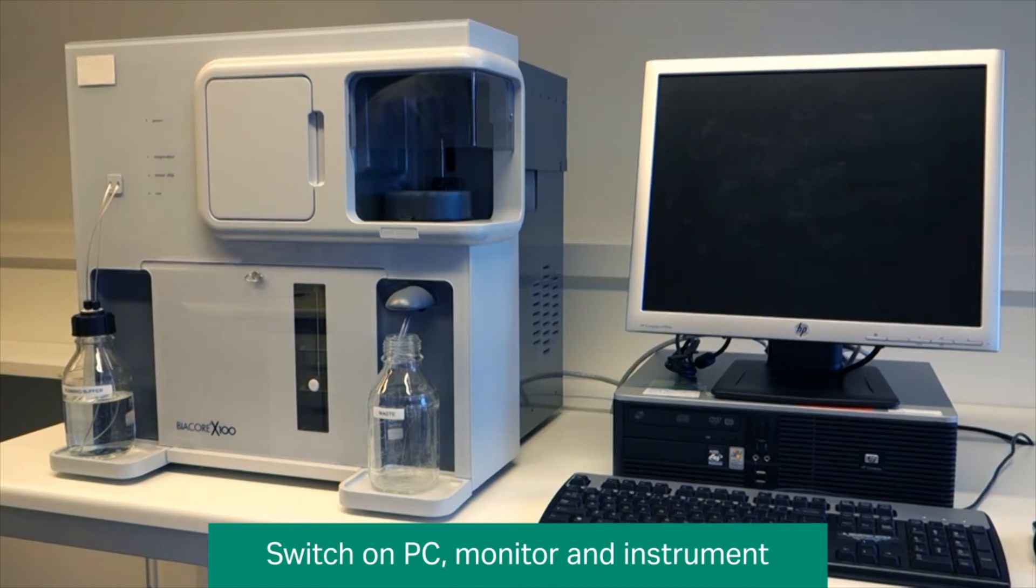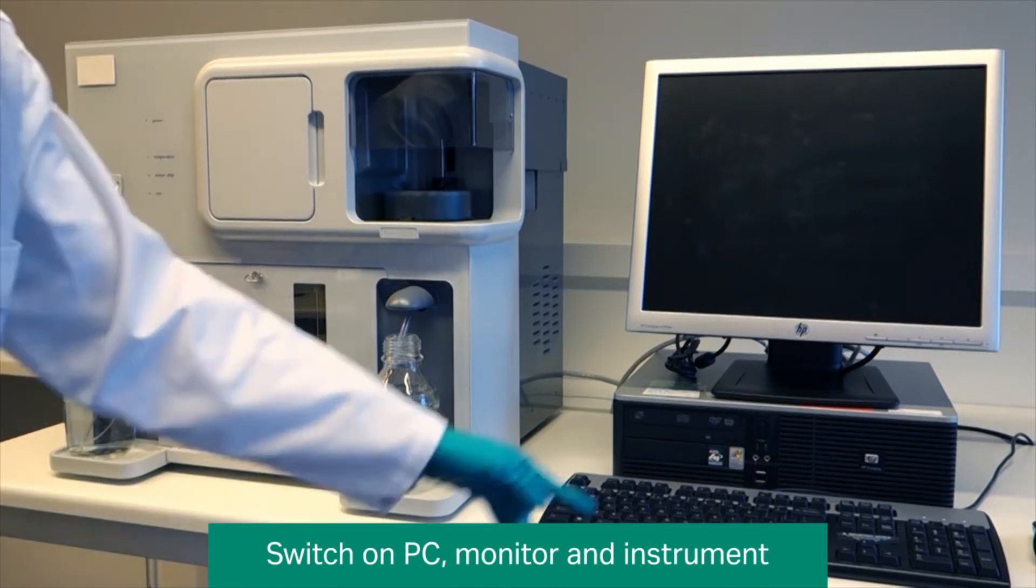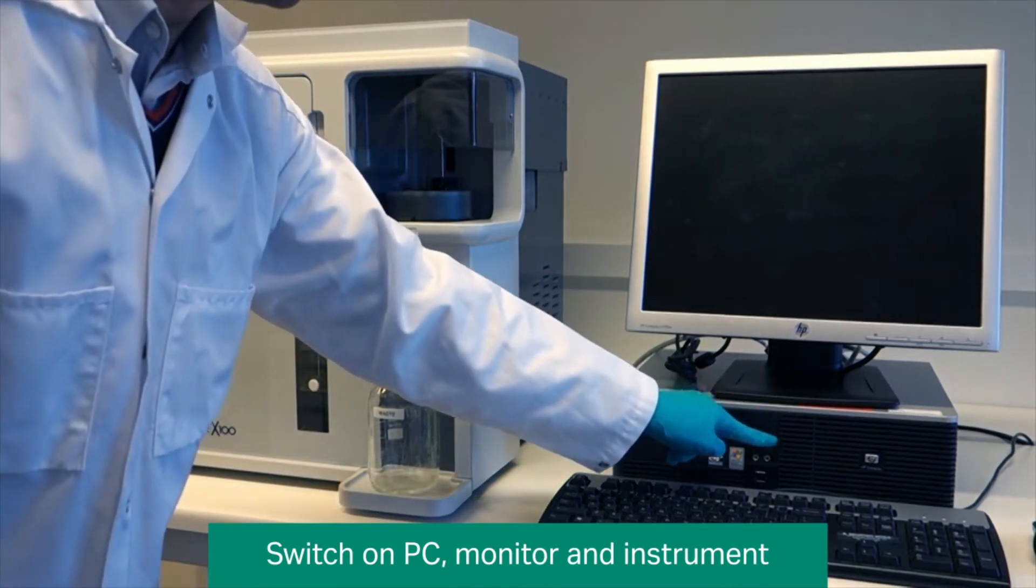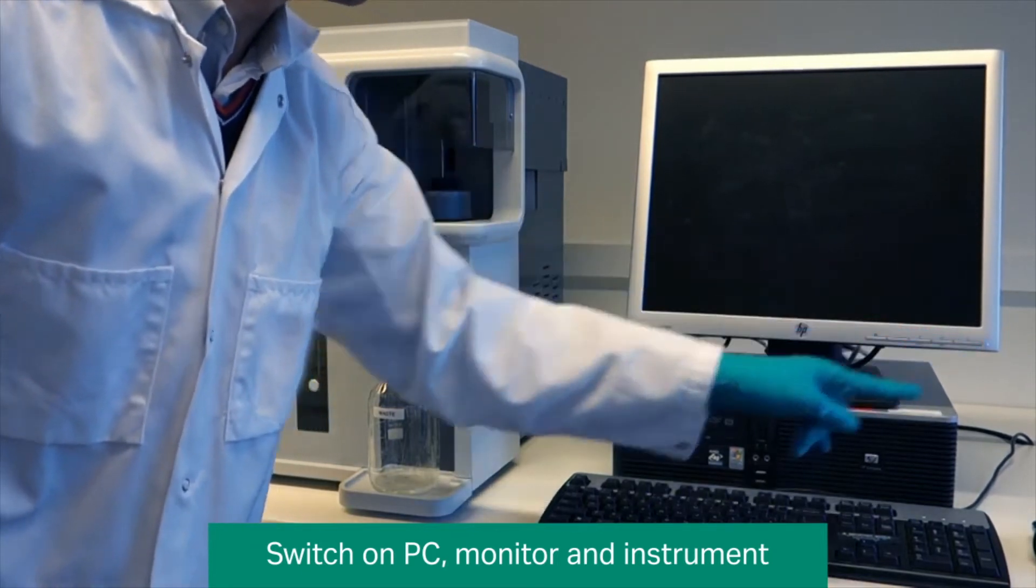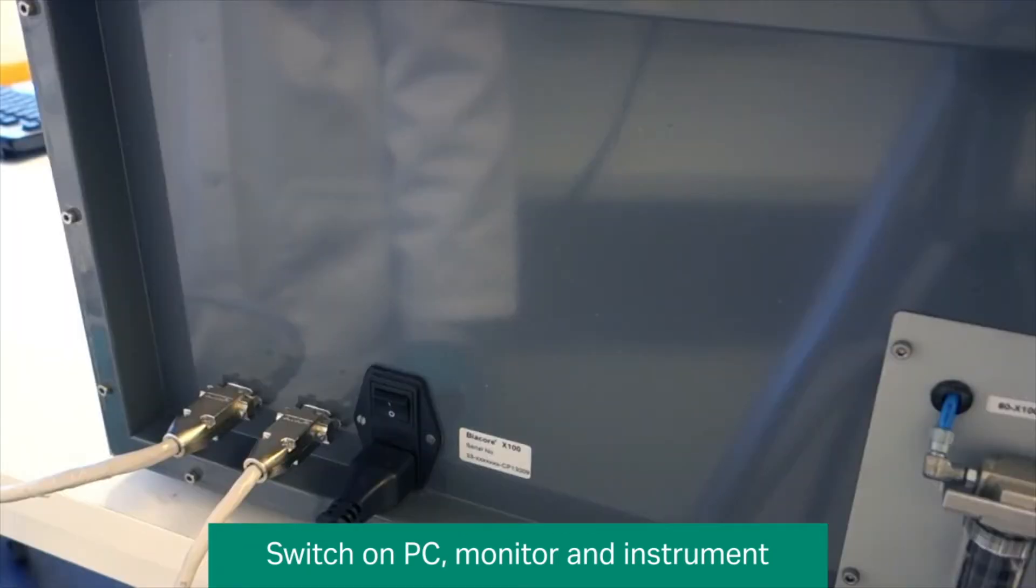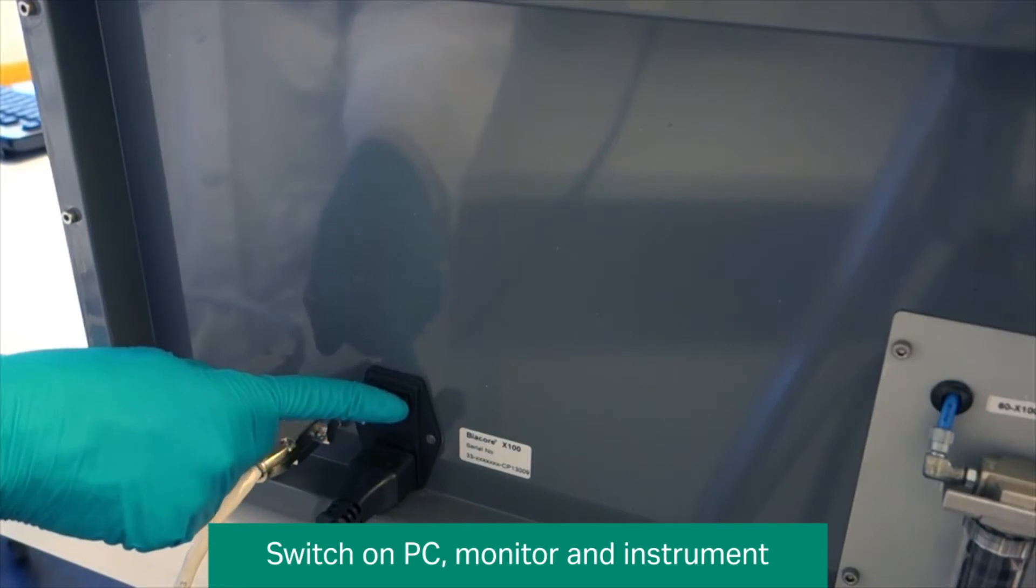To begin, switch on the PC and the monitor. Switch on the Beacore X100 by pressing the mains power switch located on the mains input panel at the rear of the instrument.